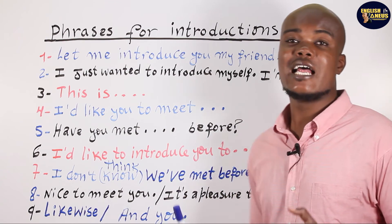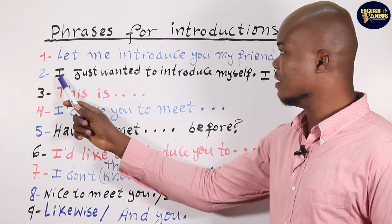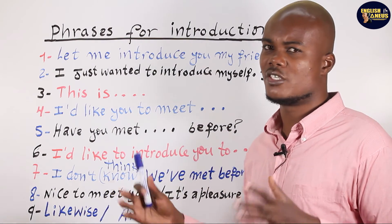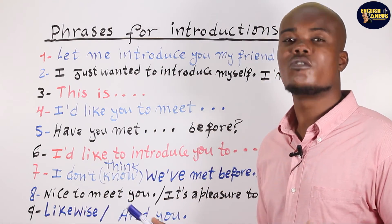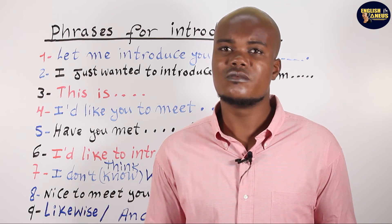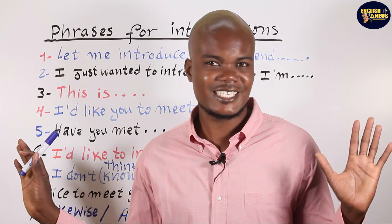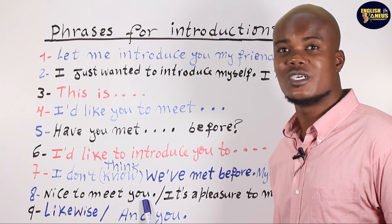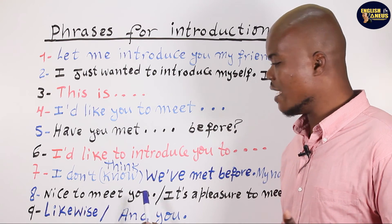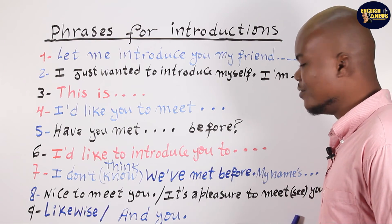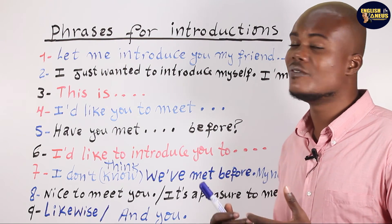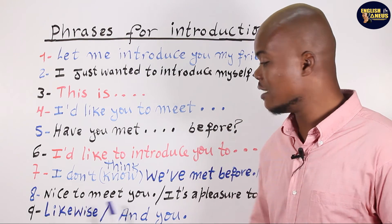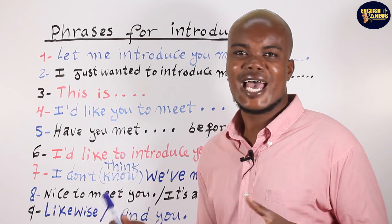Good. And when introducing yourself directly to someone, you can say: 'I just wanted to introduce myself. I am Daniel.' Or simply: 'Hello, I am Daniel. What's your name?' 'Nice to meet you, Daniel.' Very simple. You can say 'Nice to meet you' during the conversation, or 'It's a pleasure to meet you' at the end. When someone says 'How do you do,' say 'likewise.' When someone says 'What's your name,' say 'And you?' — 'How do you do? I am good, and you?' That's great.